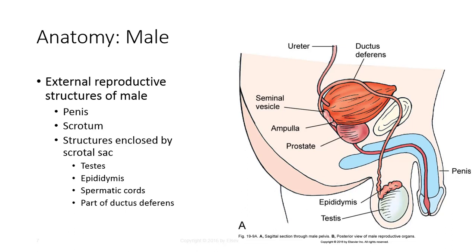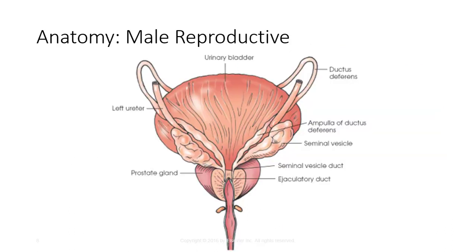The epididymis is an oblong structure attached to the superior and lateral-posterior aspects of the testes. The main duct is continuous with the ductus deferens, which is about 16 to 18 inches long and extends from the tail of the epididymis to the posterior surface of the urinary bladder. The ampulla is the expanded end that serves as a reservoir for seminal fluid and unites with the seminal vesicle. The seminal vesicles are approximately 2 inches or 5 centimeters long and are situated obliquely on the lateral-posterior surface of the bladder. The junction with the ampulla of the ductus deferens forms the ejaculatory duct.